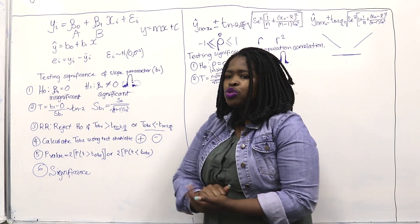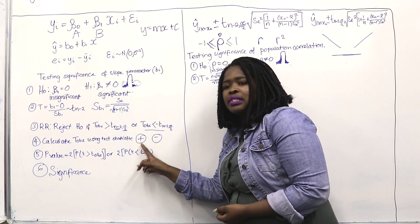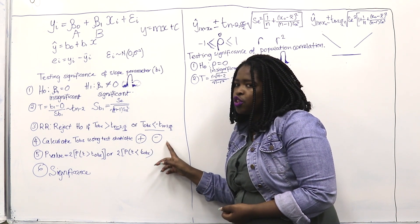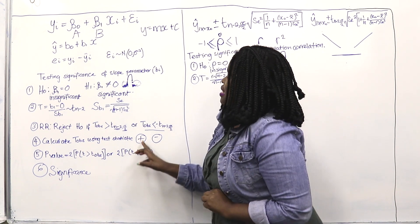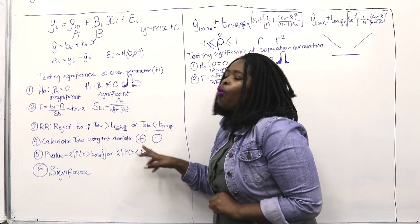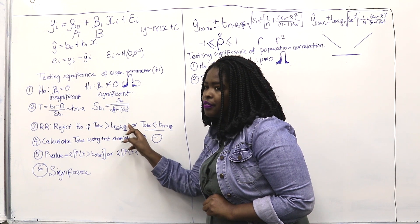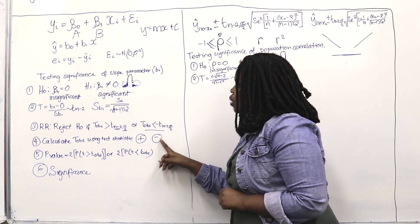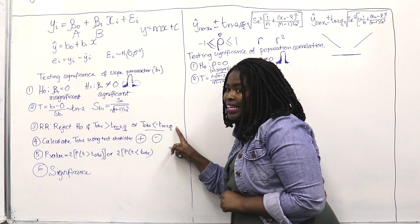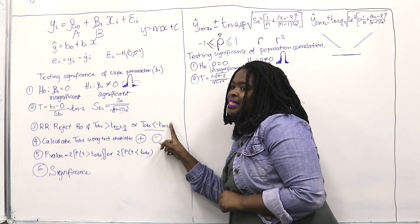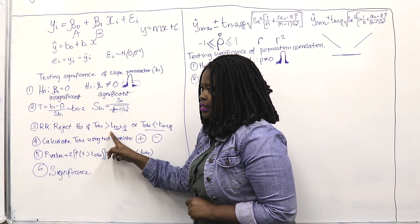Once you calculate the T observed, you get either a positive or negative T observed. If the T observed falls in the rejection region — either negative side or positive side — you reject. The decision is based on comparing T observed to the critical T value.